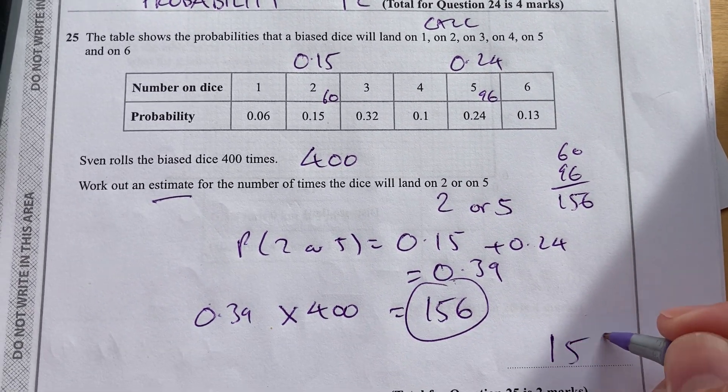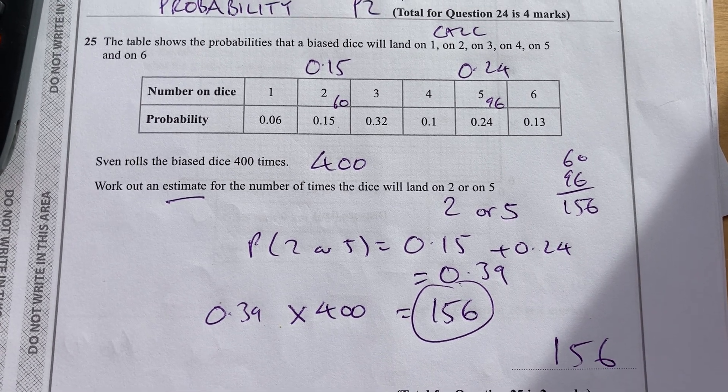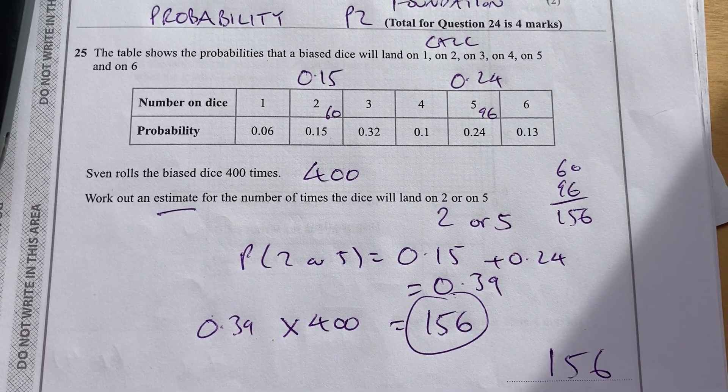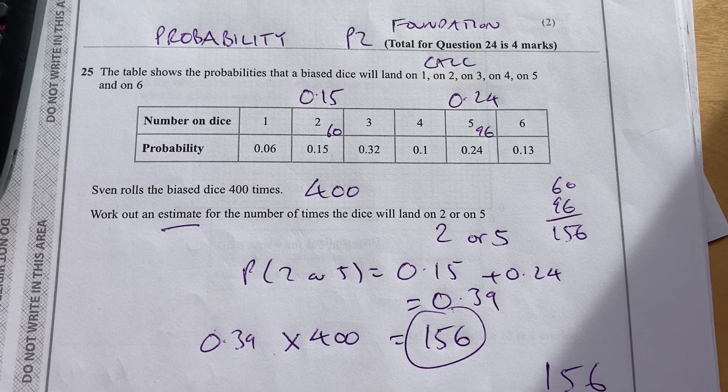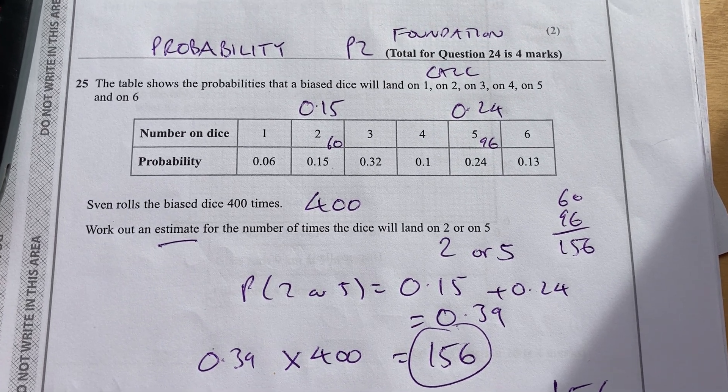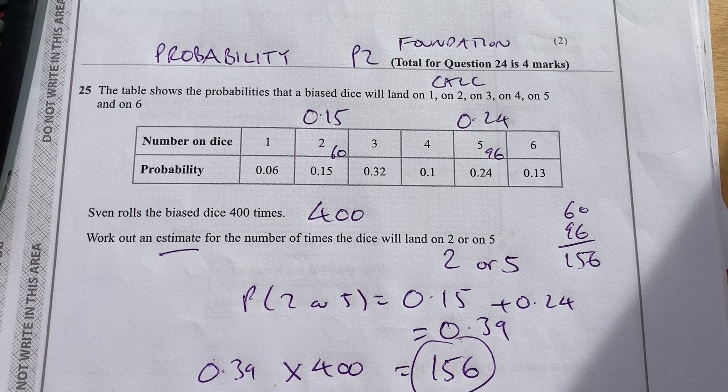Either way, it's 156 as an estimate for the number of times the dice lands on 2 or on 5. That's some probability on Maths GCSE Foundation paper 2 calculator paper.